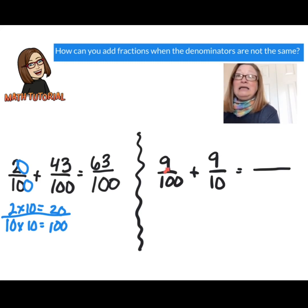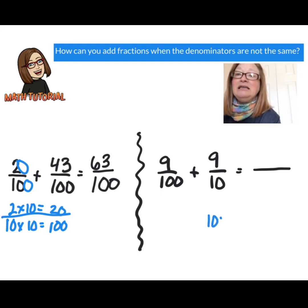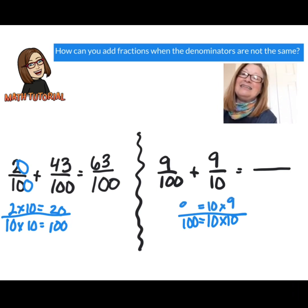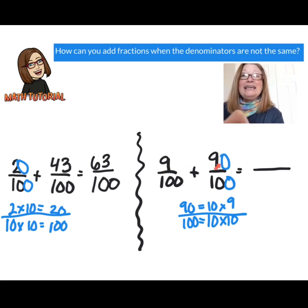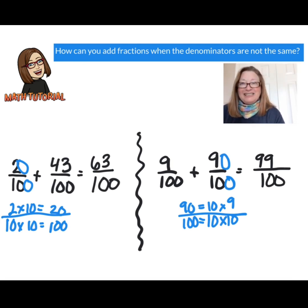Let's take a look at nine hundredths and add it to nine tenths. Those denominators are not the same, so I have to create an equivalent fraction. Let's multiply the 10 by 10 to get 100, and then do the same to the numerator: 9 times 10 gives me 90. So 90 one hundredths is an equivalent fraction for nine tenths. Now I add 9 plus 90, and the answer is 99 one hundredths. I think you did a great job going through this tutorial, and I look forward to seeing how well you do on your practice paper. Good luck!